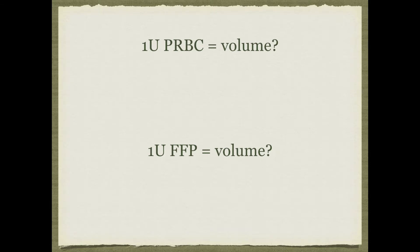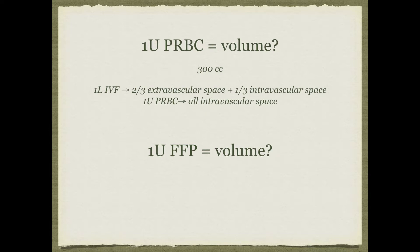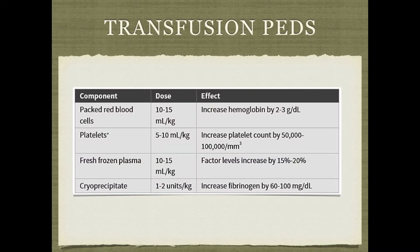A unit of packed red blood cells is about 300 mL. You may have heard that giving a unit of pRBCs is like giving a liter of fluid — that's because when you give a liter of IV fluids, two-thirds goes into the extravascular space and only a third goes intravascular. A unit of pRBCs goes entirely into the intravascular space, making it equivalent to about a liter. For pediatric transfusions, the dose is 10 to 15 milliliters per kilogram.